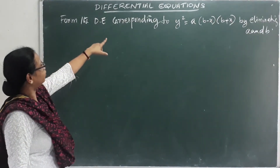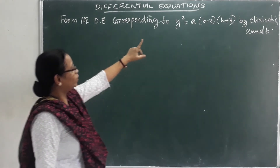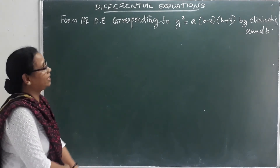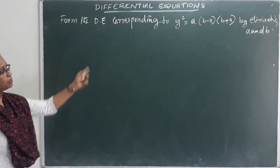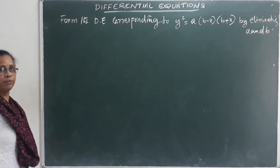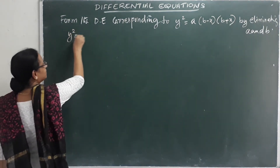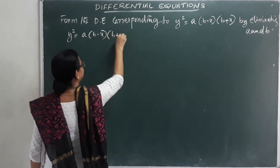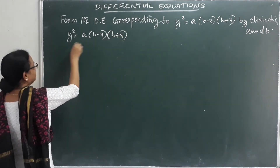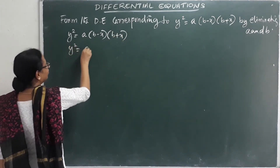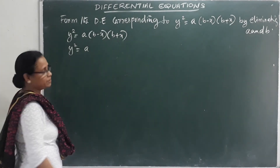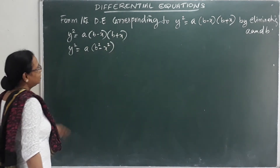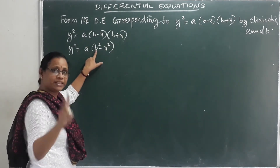Next problem: Form the differential equation corresponding to y² = a(b − x)(b + x), by eliminating a and b. We simplify: y² = a(b² − x²). There are two arbitrary constants so we differentiate twice.